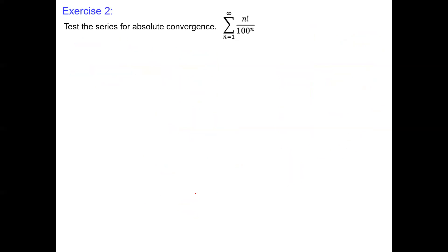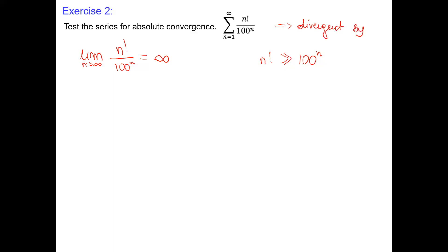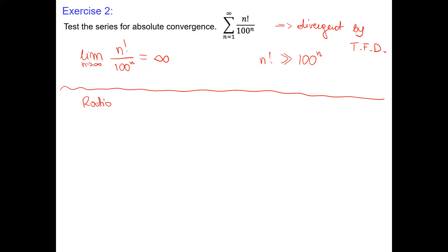Exercise number two: test the series n!/100^n for absolute convergence. We may notice right away that n! grows faster than any exponential function — that's from the relative rates of growth. So we may say this is divergent by the n-th term divergence test. However, since we see factorial and exponential form, ratio test is also a good tool to practice.